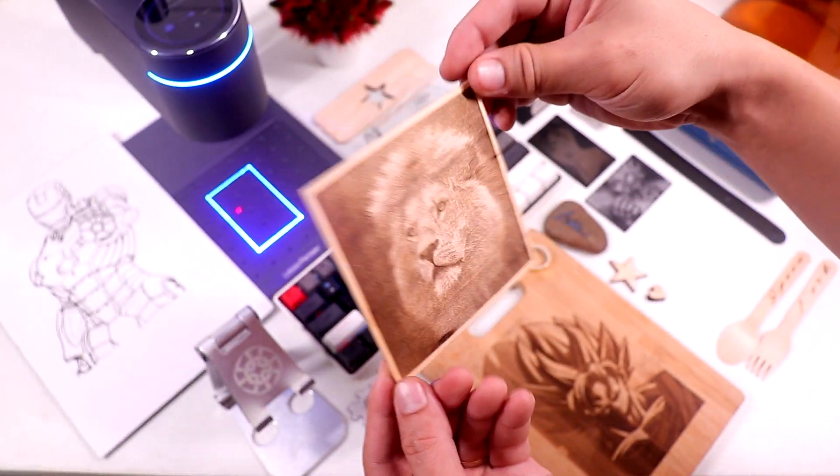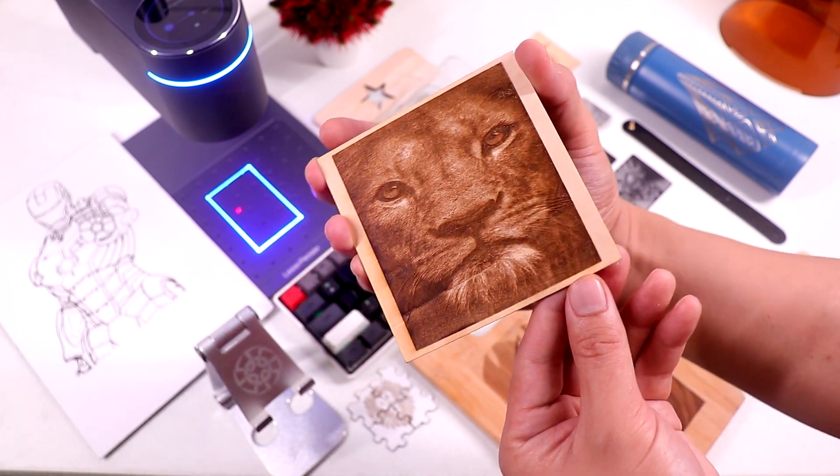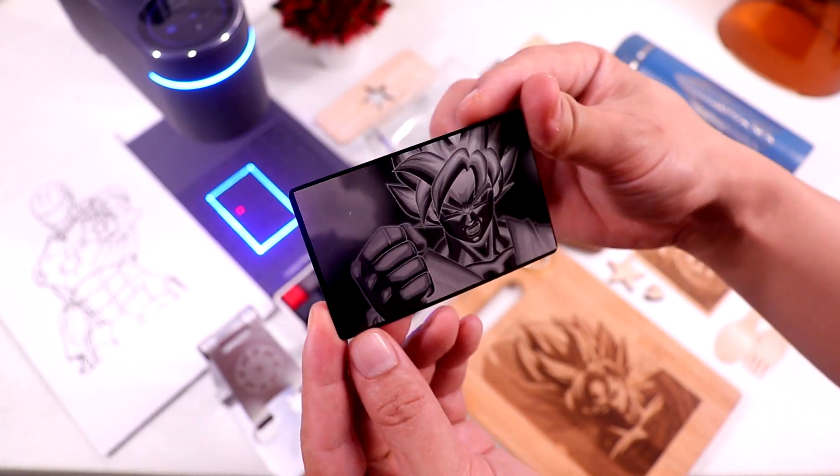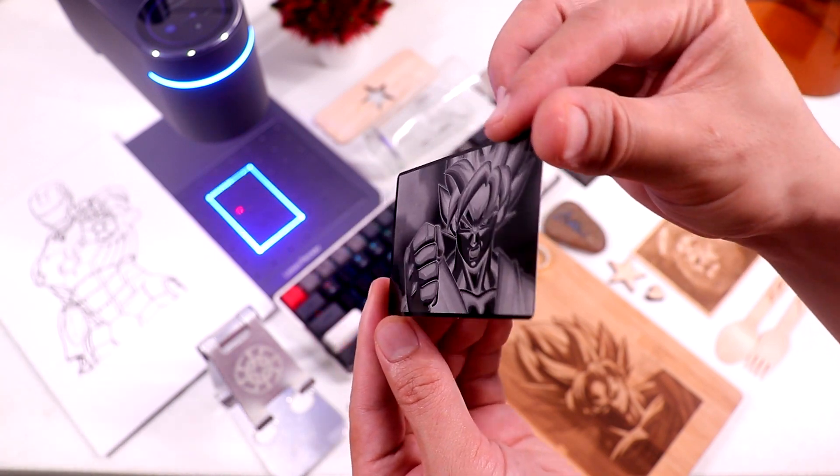And then there's another lion at the back. And as you see, the engraving is really nice. And then we have Goku here. And the image looks vivid as if it was printed. It looks really nice.